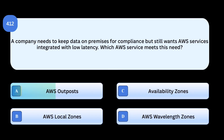Correct answer: AWS Outposts. AWS Outposts brings AWS services and infrastructure directly to on-premises environments, ensuring data residency while maintaining low latency connectivity. Why others are incorrect: AWS Local Zones extend AWS closer to users in metropolitan areas, not on-premises. Availability Zones are within AWS regions, not customer premises. AWS Wavelength zones are built for mobile edge computing with telco networks, not compliance-driven on-premises needs.